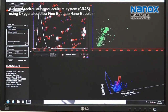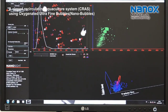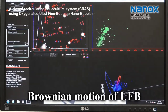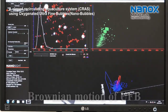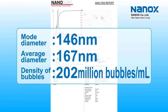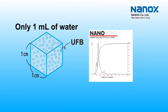Substances at the nanoscale are found to be moving slightly. This is called Brownian motion. The movie on screen shows Brownian motion of the ultrafine bubbles. According to measurements from the analysis using Nanocyte, 200 million bubbles per milliliter of ultrafine bubbles with an average particle size of 167 nanometers were generated — a surprising number indicating that only one milliliter of water contains 200 million bubbles in nanoscale.